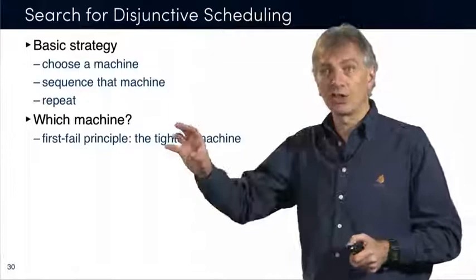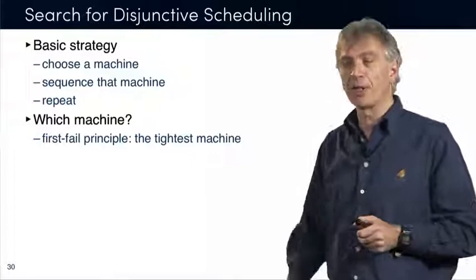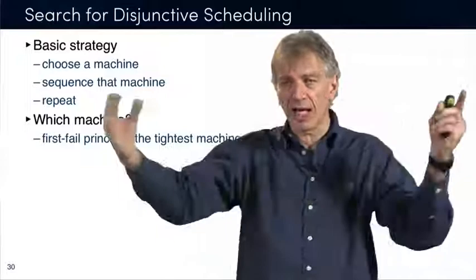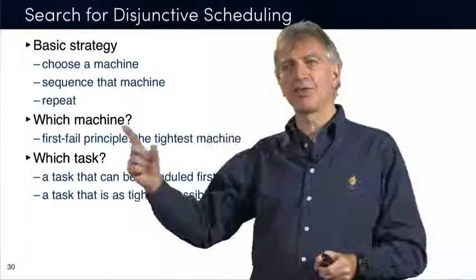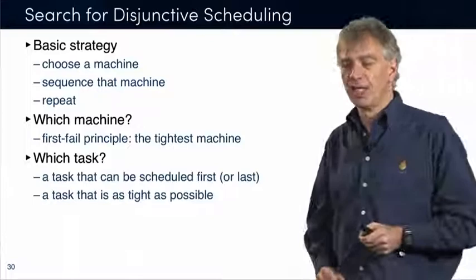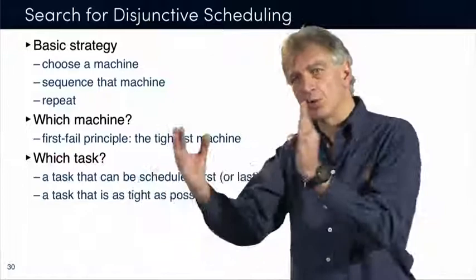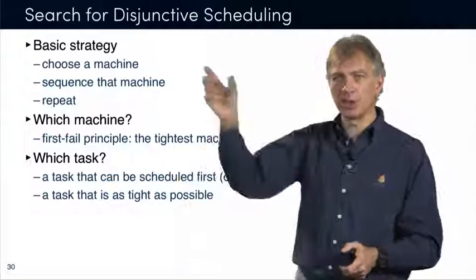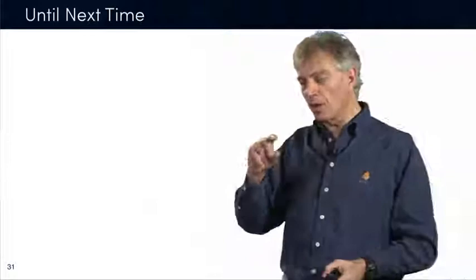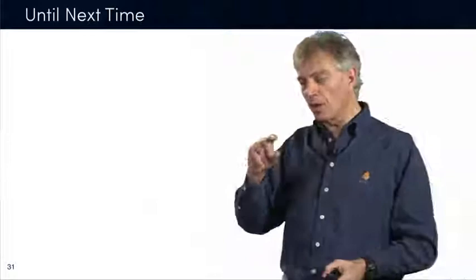The search is also very interesting. You don't need to find starting times explicitly — as long as you have only disjunctive constraints, what you need to do is order the tasks on the machine. The search strategy typically chooses a machine, orders the tasks on it, then repeats for the other machines. You choose the machine which is tightest — where the sum of durations of all tasks leaves little flexibility. Then for task ordering you apply fail-first principles: look at tasks which are tightly packed or must be scheduled very early. Next time I'll show you very interesting search strategies for these scheduling problems, and a beautiful hybridization of constraint programming with local search which is really useful in practice.